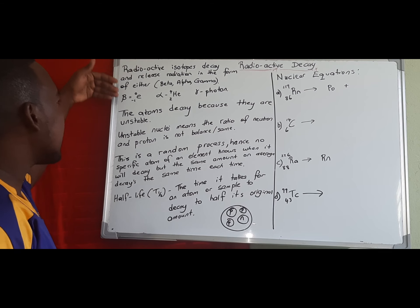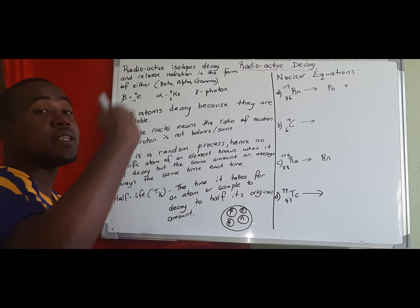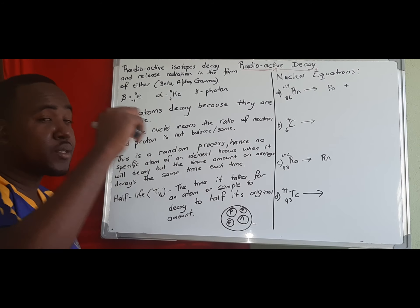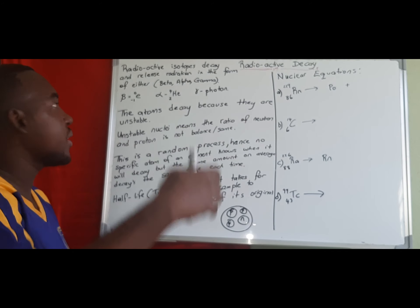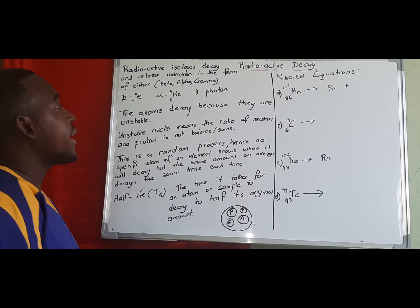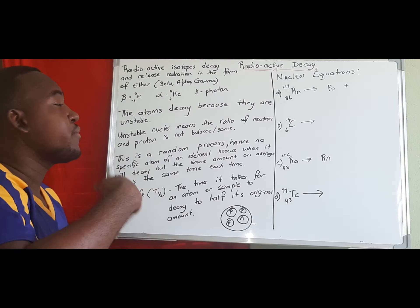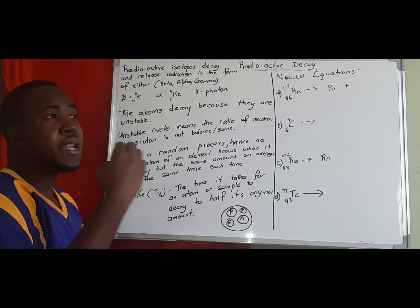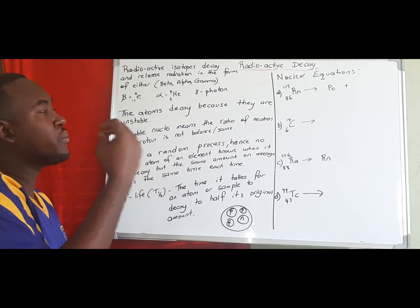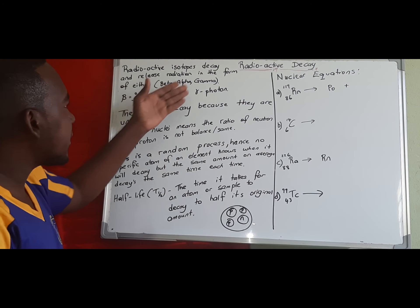The forms of radiation we have are alpha, beta, and gamma. Beta radiation is emitted as an electron — it's a high-speed electron moving. Alpha is a high-speed helium atom. Gamma is a photon, which is a light particle — the packets of particles that make up light.